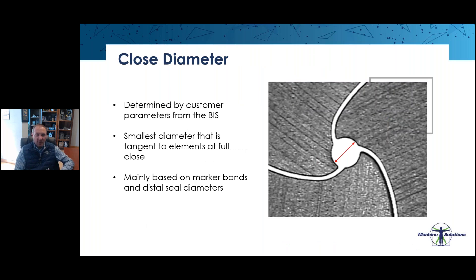Regarding closed diameter: this is the through hole seen when all the elements are closed down — the diameter tangent to the elements at full close, indicated by the red arrow. Looking at the distal seal or marker band diameter, whichever is greater, we want to make sure the closed diameter can accommodate those various sizes without pinching. If the element tip lands on the distal seal because the closed diameter is too small, it'll create witness marks or potential damage. Similarly, if the marker band plus double wall thickness exceeds the closed diameter, the balloon material can be pinched between the element tip and the marker band, again potentially creating damage.